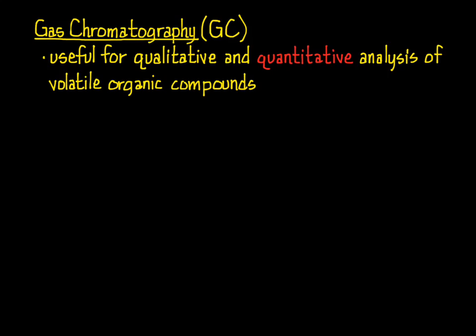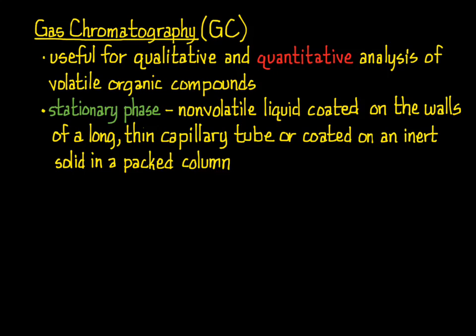Gas chromatography, or GC as it is commonly referred to, is useful not only for the qualitative but the quantitative analysis of volatile organic compounds. In gas chromatography, the stationary phase is a non-volatile waxy liquid coated on the walls of a long, thin capillary tube or coated on small particles of an inert solid in a packed column.